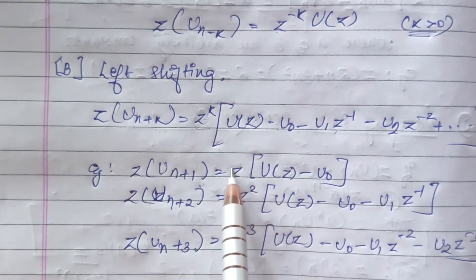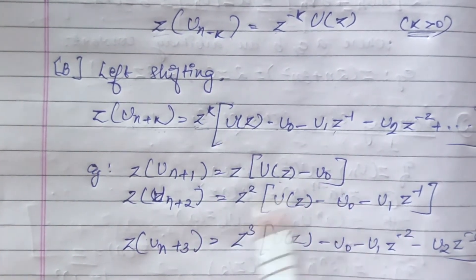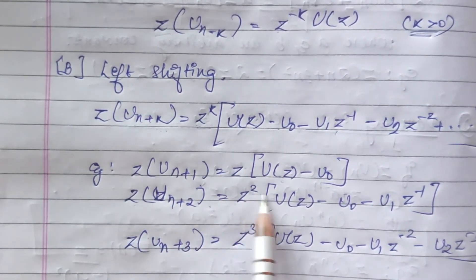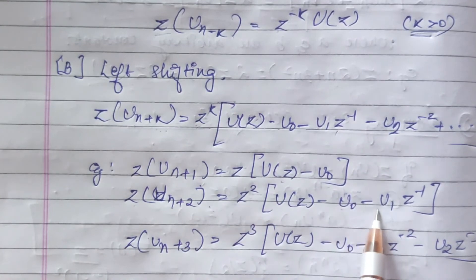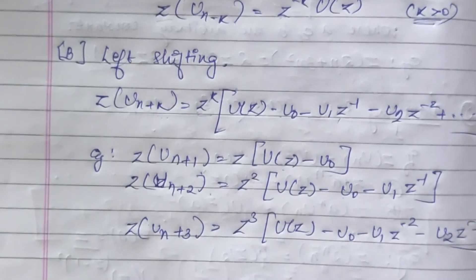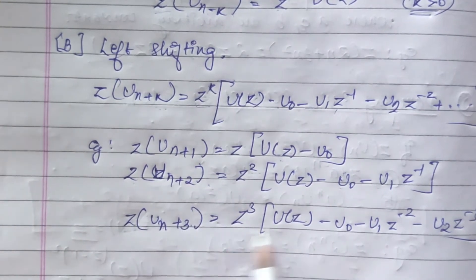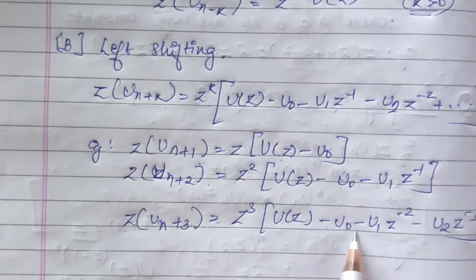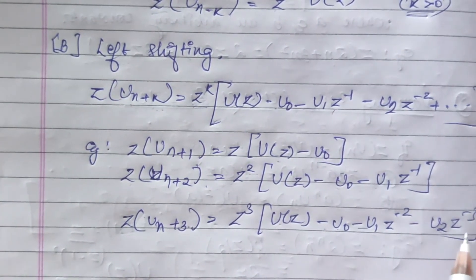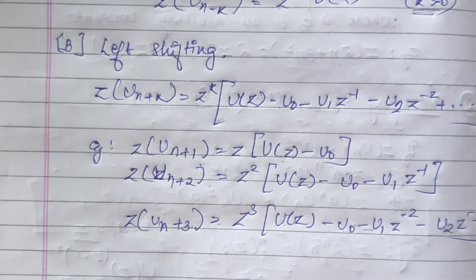For example, when k = 1: Z{u(n+1)} = z·[U(z) − u(0)]. When k = 2: Z{u(n+2)} = z²·[U(z) − u(0) − u(1)·z^(−1)]. When k = 3: Z{u(n+3)} = z³·[U(z) − u(0) − u(1)·z^(−1) − u(2)·z^(−2)]. Those were the left and right shifting properties.